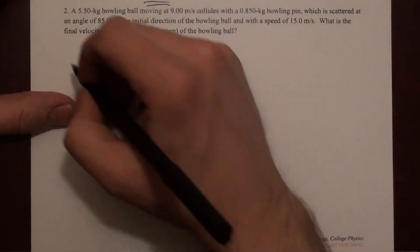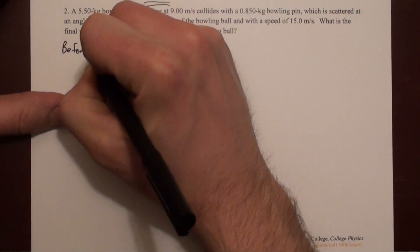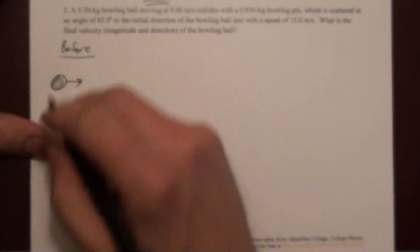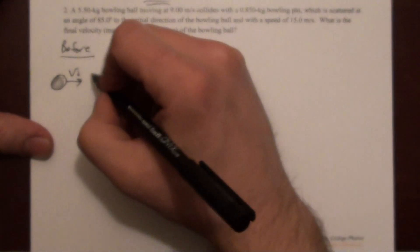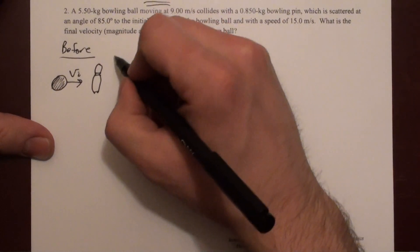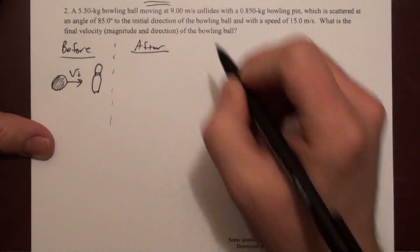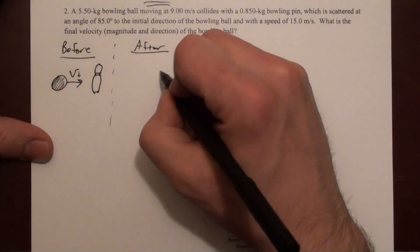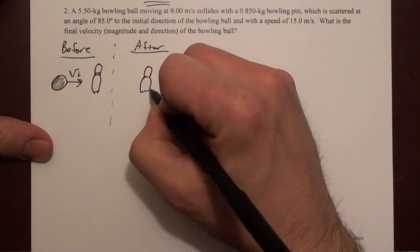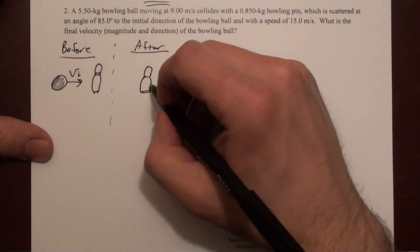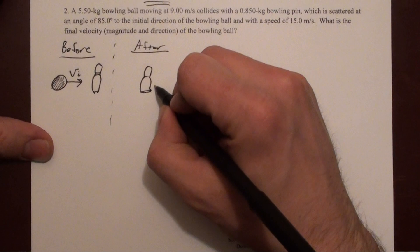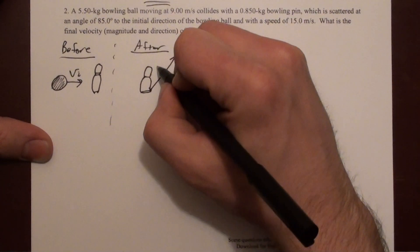We'll draw a situation here. Here's our before. Beforehand we have the bowling ball with some v initial approaching this bowling pin. Afterward, it's more complicated than the previous problem. The bowling pin leaves this collision at some velocity, 15 meters per second. I'm just going to label it as vp for vpin.